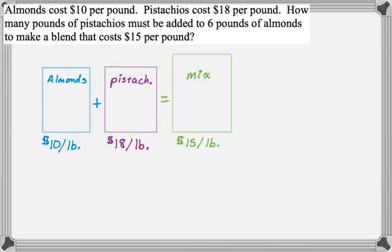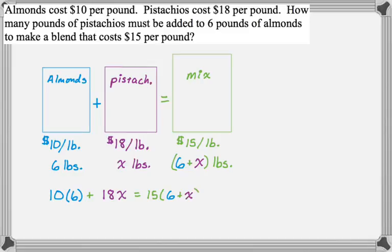Now I need to know how much of each thing I have. Almonds, I actually have 6 pounds of those. Pistachios are what I'm adding, so I don't know how many of those I have, so I'm going to call it x. The mixture ultimately will have 6 plus x. As long as you can organize yourself like this, you can answer these problems with no issues. So it's $10 per pound times 6 pounds plus $18 per pound times x pounds equals $15 per pound times 6 plus x pounds.